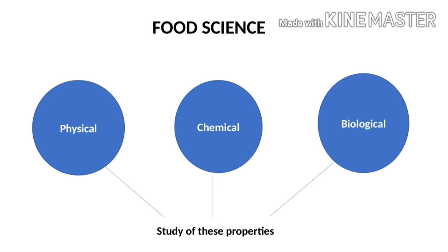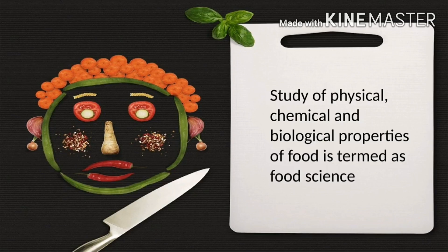Let's understand food physics with the help of an example of an oil-in-water emulsion. These kinds of emulsions normally split, but in some cases they don't — for example, mayonnaise — thanks to physical phenomena. Let's understand food microbiology: the fact that you're able to store a jar of pickles at room temperature for years and years has a lot to do with food microbiology.